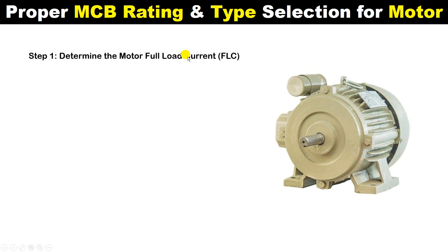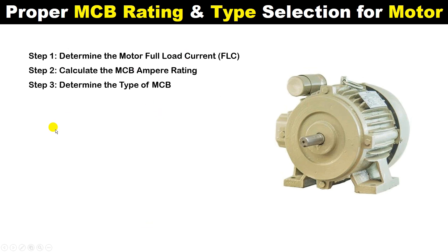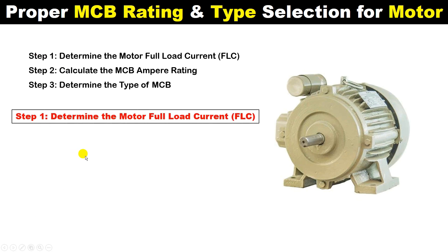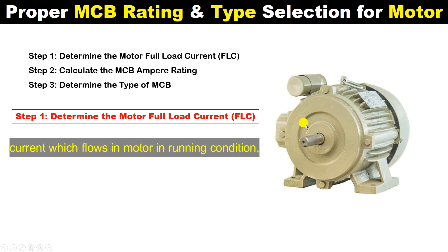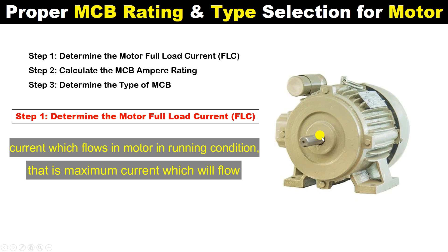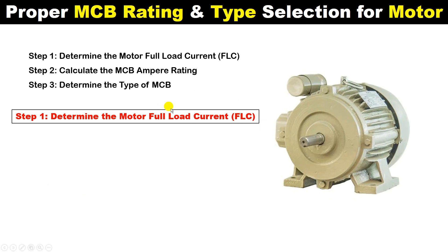To find the proper MCB we will follow 3 steps. In the first step, we have to find the FLC of the motor. FLC stands for Full Load Current. This means if you connect your motor with a load and turn on the power supply, the current which flows in the motor in running condition — that maximum current — will be our FLC, which is the full load current.